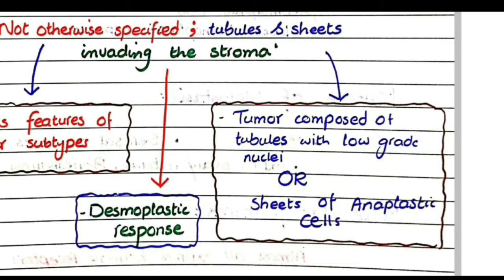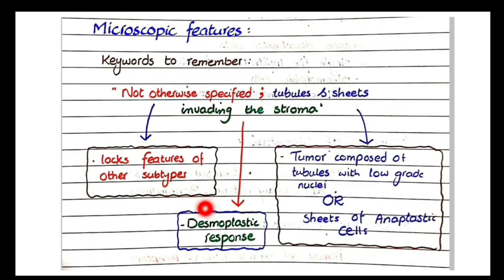The tumor arises from the terminal ducts and its morphology is initially like ducts. If the tumor is well differentiated — meaning good prognosis — it will be in the form of tubules with low-grade nuclei. If the tumor is undifferentiated, it will not be arranged as tubules but rather as sheets of anaplastic cells. In invasive ductal carcinoma you will also see a desmoplastic response.